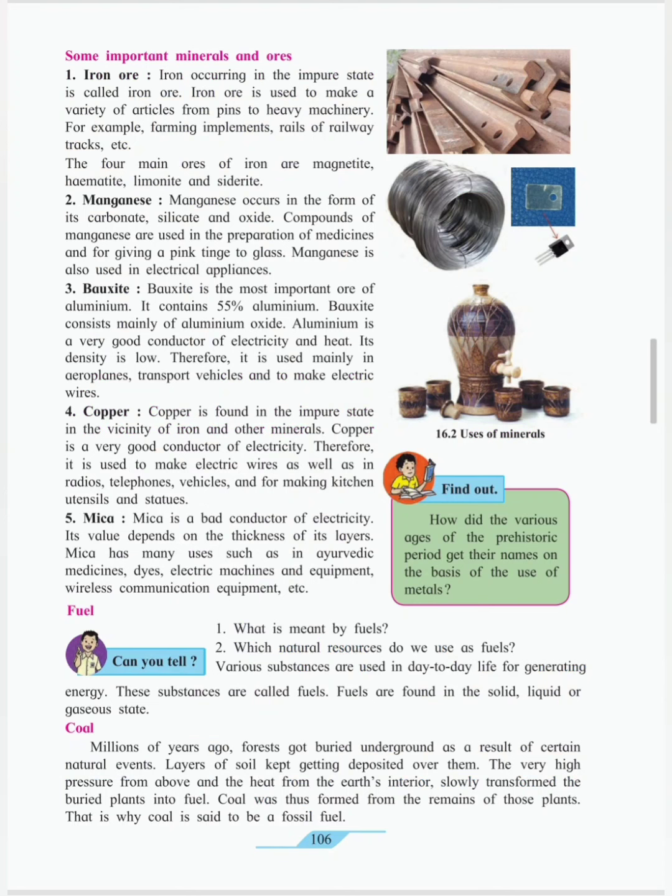Some important minerals and ores — first one is iron ore. There are four main ores of iron: magnetite, hematite, limonite and siderite. Iron occurring in the impure state is called as iron ore. Iron ore is used to make a variety of articles from a pin to heavy machinery, for example, farming implements, rails of railway track, different kinds of machineries and different vehicles. These are all made up of iron.